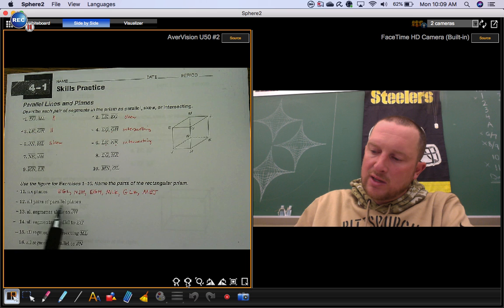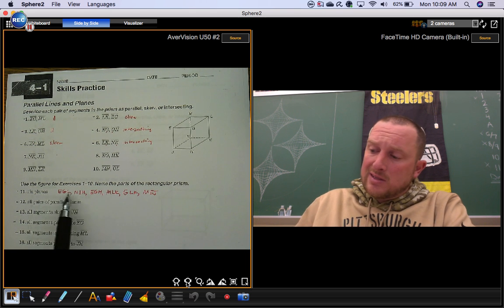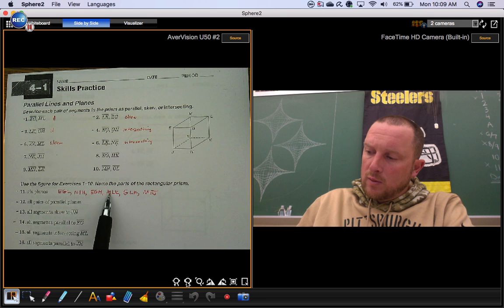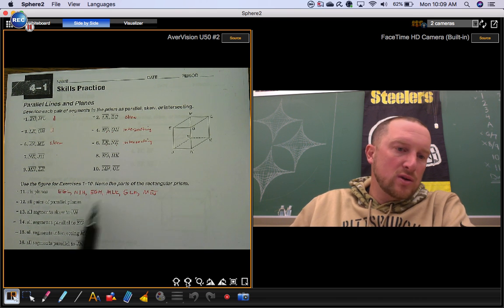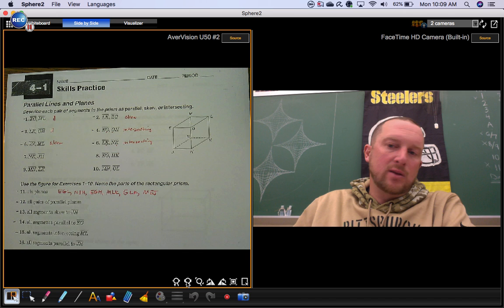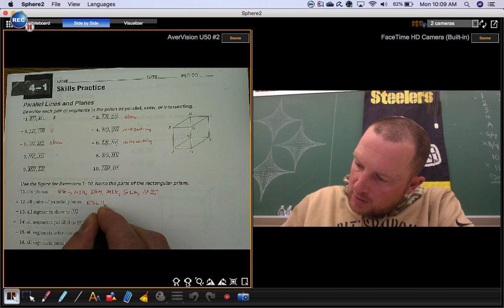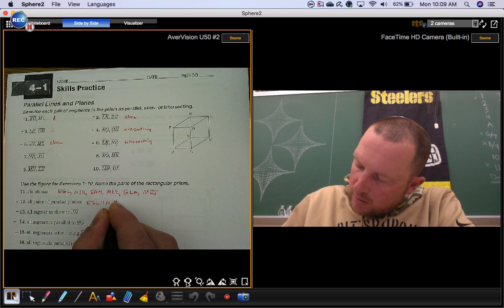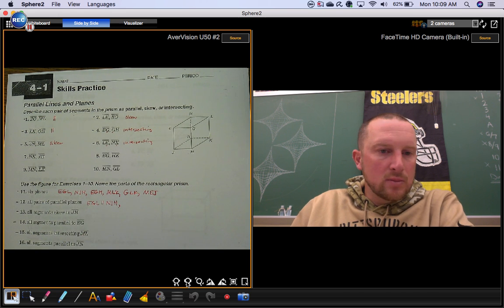For number 12, they want you to list all the pairs of the parallel planes. So for example, ceiling and floor. Front wall, back wall. Right wall, left wall. I named them in that order, just so it would be easier to name the parallel planes. Those two planes are parallel. That's the parallel mark in between them.